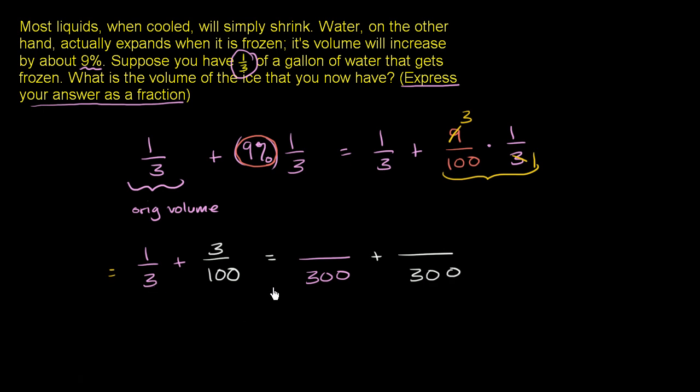Now to go from 3 to 300 in the denominator, you multiply by 100. So you have to multiply the numerator by 100 as well. So 1 third is the same thing as 100 over 300. And to go from 100 to 300, we had to multiply by 3 in the denominator. So we have to multiply by 3 in the numerator as well.